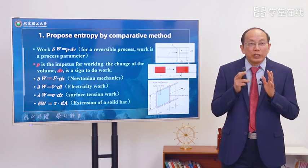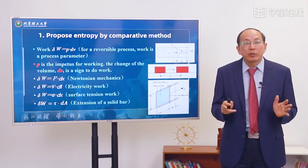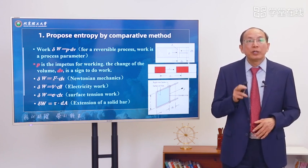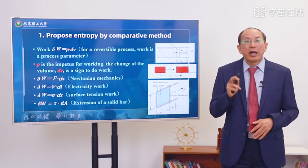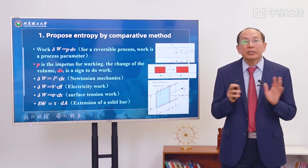We can find from this that the expansion work, electric work, Newtonian work, extension work, and surface tension work all have the same form: delta w equals f dot dx. The equations are very similar.